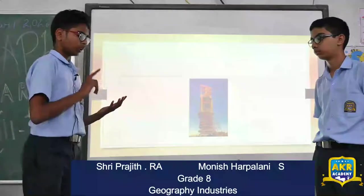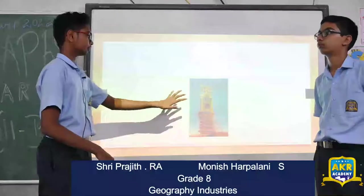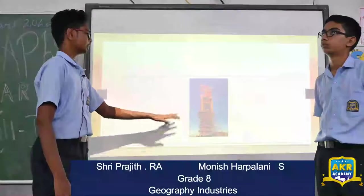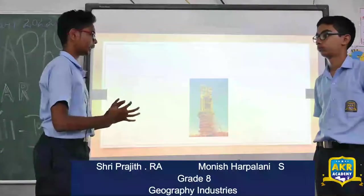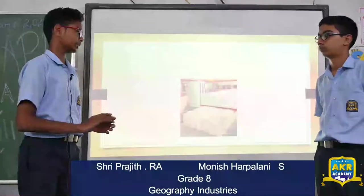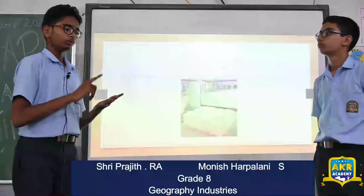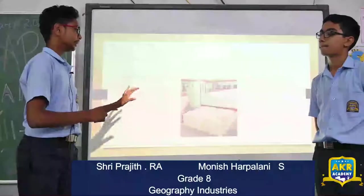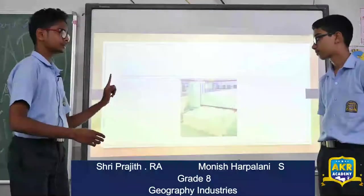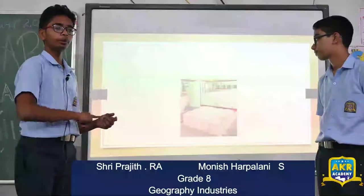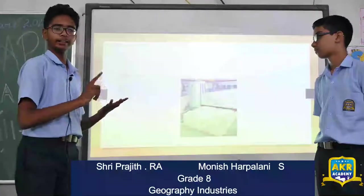Small scale industries include the cottage industry and paper industry. The large scale industry is the iron and steel industry. Now let's see how steel is extracted from iron. The raw materials required are iron, carbon from coal, and limestone. These three are smelted in the blast furnace. It is smelted and after that, the impurities separate from the pure material. That pure material is the steel, and the impurities are known as slag — S-L-A-G.